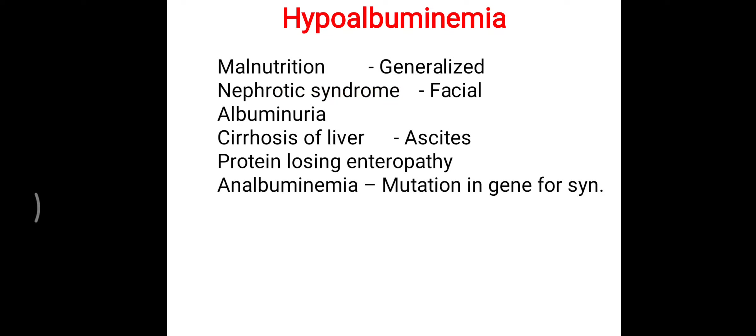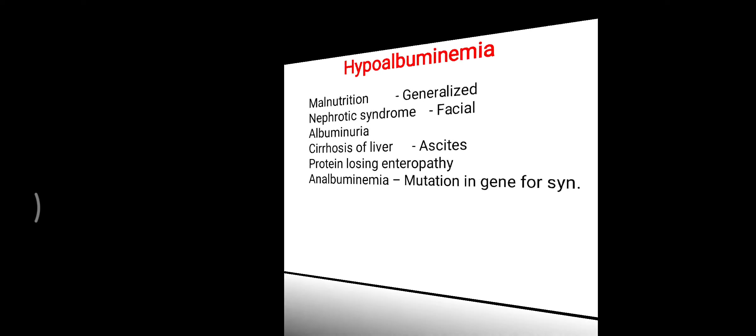To summarize: if the transport mechanism is faulty and albumin leaks from the bloodstream, that leads to hypoalbuminemia. Albuminuria is part of nephrotic syndrome. Cirrhosis means the production site of albumin — the liver — is not working properly. Loss of albumin from the gastrointestinal tract, and the rare condition analbuminemia, can all lead to hypoalbuminemia. That's all about the various conditions which can lead to hypoalbuminemia.